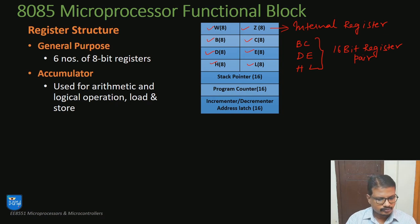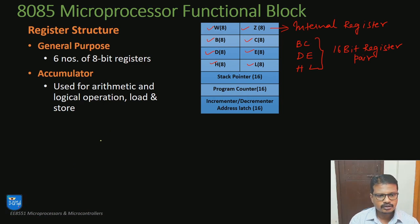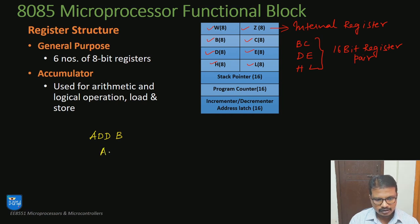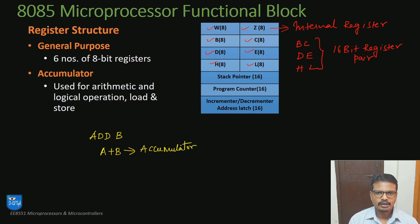Next is the accumulator. The accumulator is a tri-state 8-bit register used for arithmetic, logical, load, and store operations. Let me use an example to explain its purpose. Assume we are going to do an addition operation — the instruction 'add B'. When this instruction is executed, the contents of the accumulator and the contents of register B will be added, and the result will be stored in the accumulator. Similarly, when performing logical, load, or store operations, the accumulator will be used.